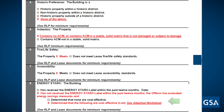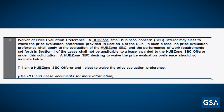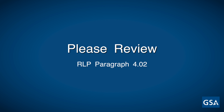Section 8 concerns the government's Energy Star requirements and whether your building has received the Energy Star label. In this example, the building has not received the Energy Star label, but the offeror has included a list of cost-effective energy improvements with the offer. See RLP paragraph 2.09 for the government's important energy efficiency standards. Finally, Question 9 concerns offerors that are HUBZone small business concerns. You would only fill this out if you were a HUBZone small business concern. Review RLP paragraph 4.02 regarding HUBZone small business concerns requirements.